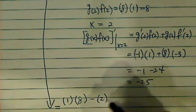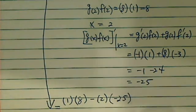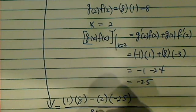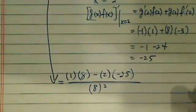And then minus x is 2, and this whole big complicated derivative is -25, and then on the bottom I have 8, that's squared.